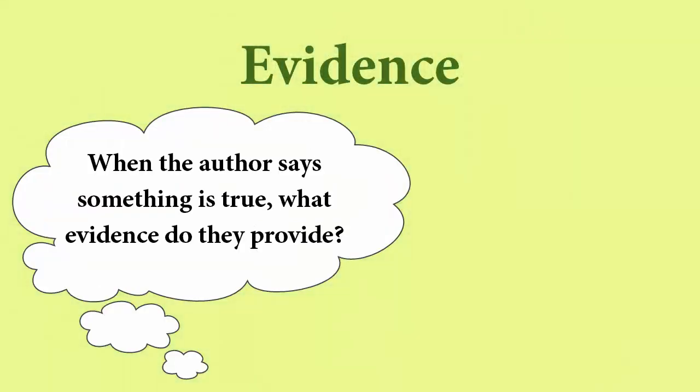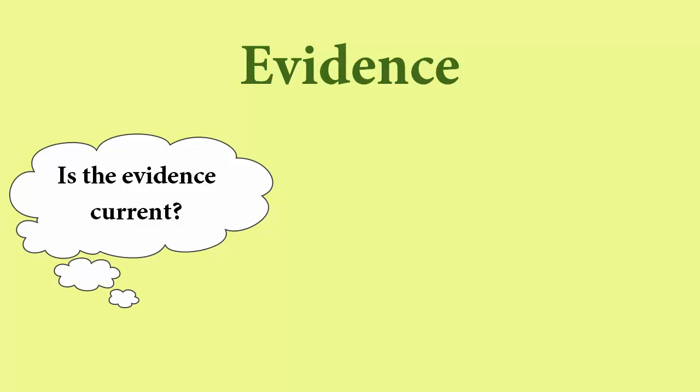You need to look closely at the evidence that a work is using to back up its arguments and see where that evidence is coming from and if it seems credible. You should also take a look at the date of the evidence that is being used and make sure that it is reasonably current to when the article was published. If you read an article from now claiming that internet access is not important to student success and the study it quotes is from 1993, you'll want to ask yourself why more current information isn't being used in the article and if it can still be trusted.